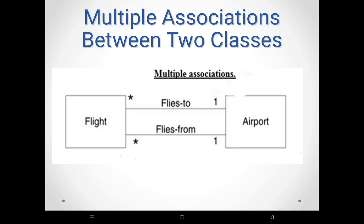Multiple associations are possible between two classes. For example, Flight and Airport are two classes. Multiple flights fly to an airport, and multiple flights fly from an airport — these are two different associations. The multiplicity is many-to-one. Multiplicity describes how many objects are currently connected.